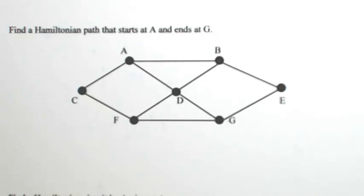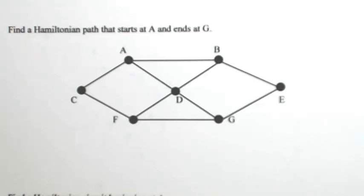Find a Hamiltonian path that starts at A and ends at G. So what we're going to do is start at A and travel through all of the vertices once and only once, ending at G.